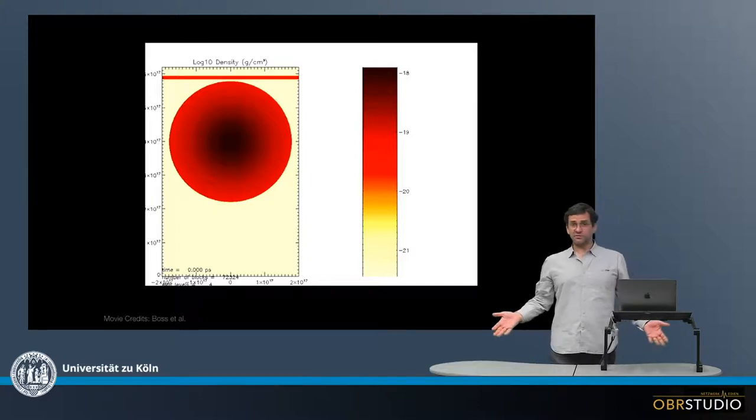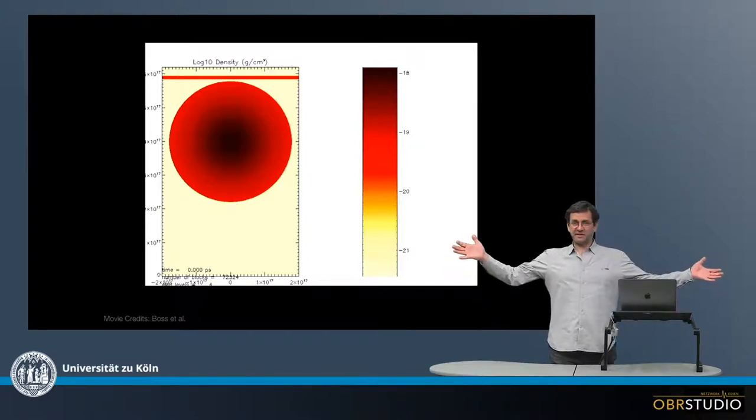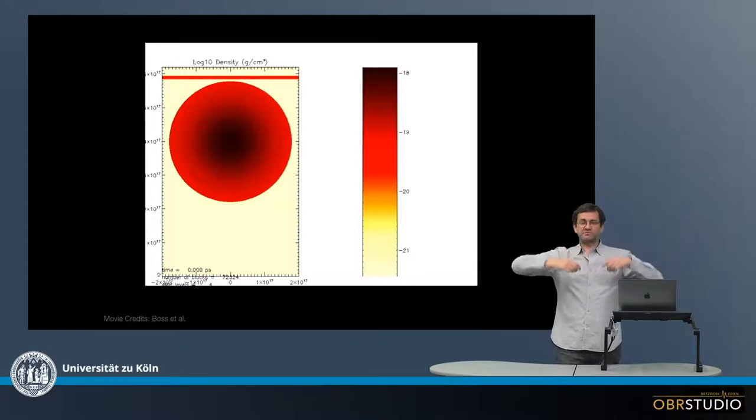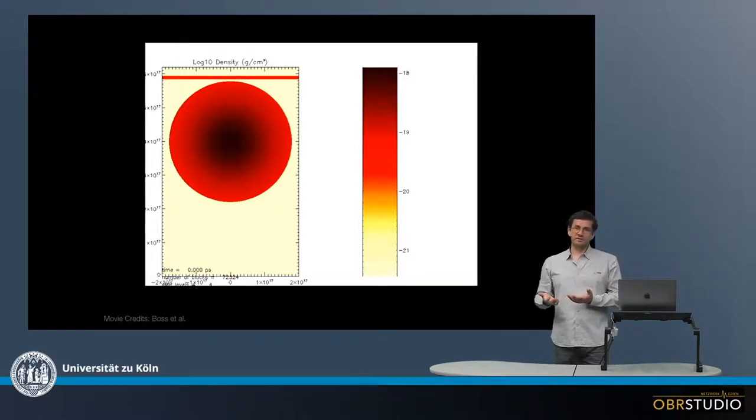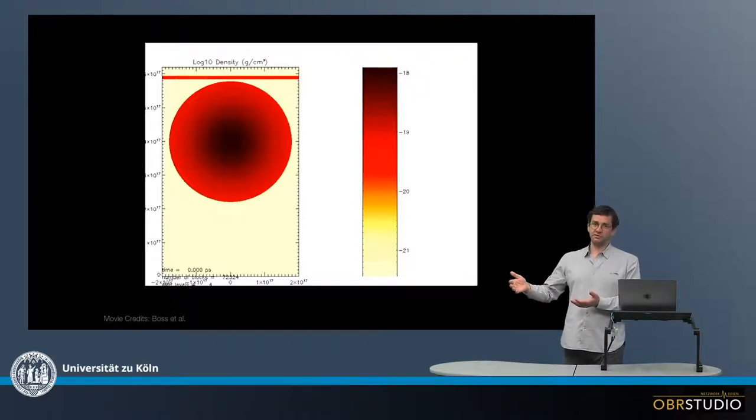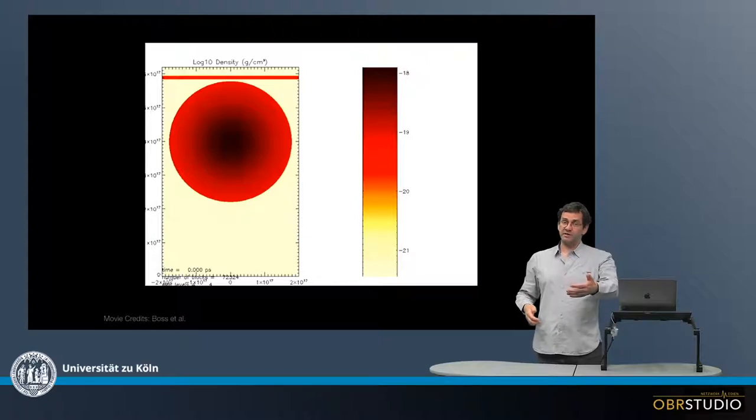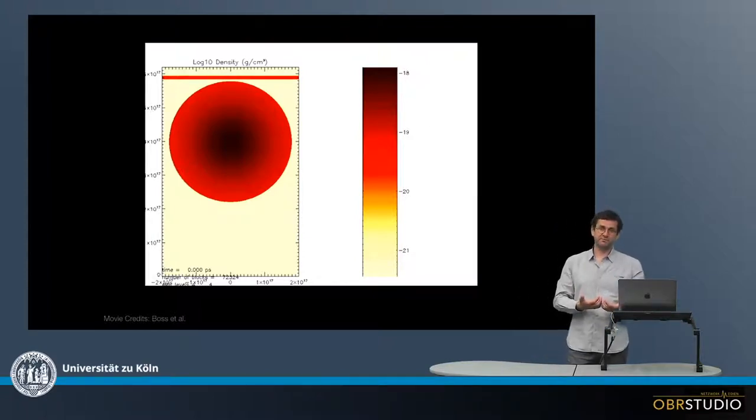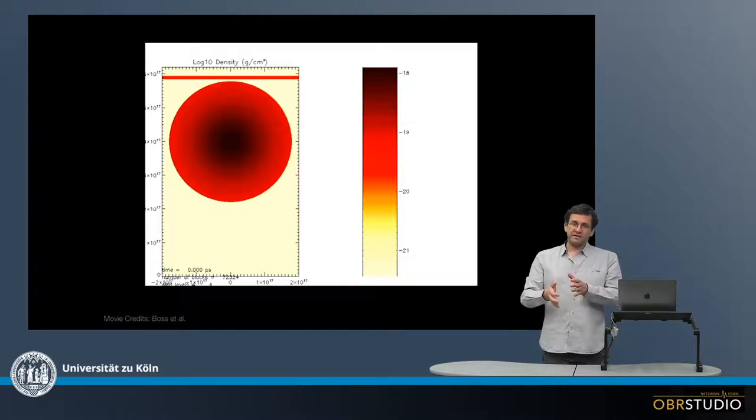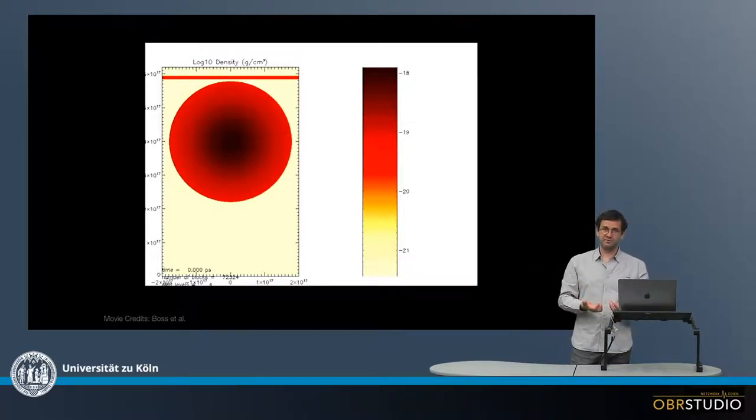Our solar system formed when a large molecular cloud, maybe a light year in diameter, started to collapse. What triggered the collapse is not yet clear. It could have been that a nearby supernova explosion sent out a shockwave that, when hitting the molecular cloud, triggered its collapse. But it could also have been that just some random statistical fluctuation within the cloud triggered the collapse.